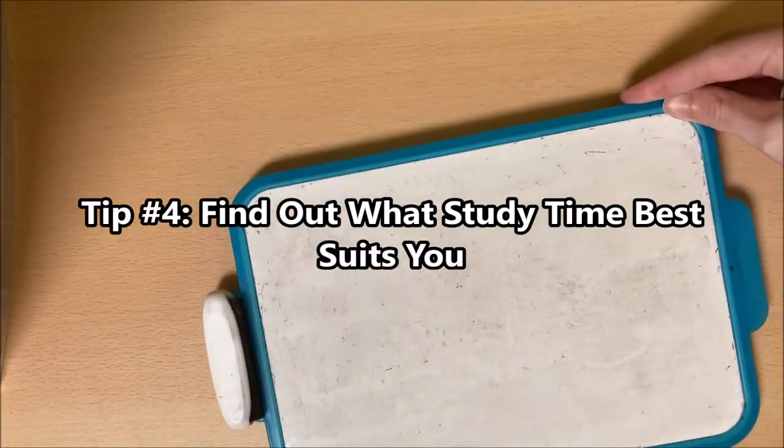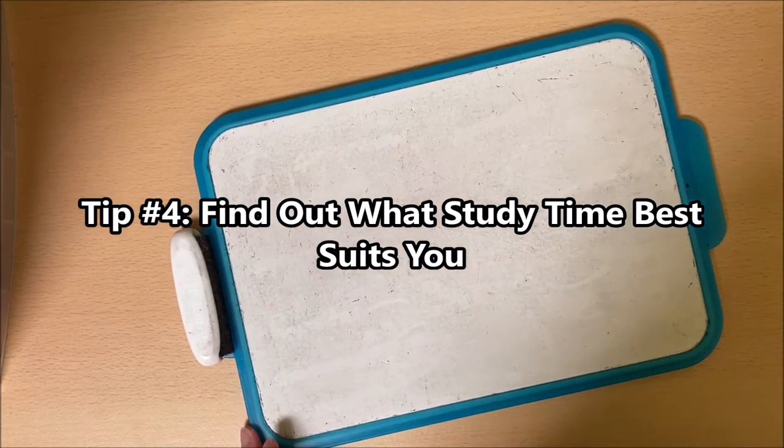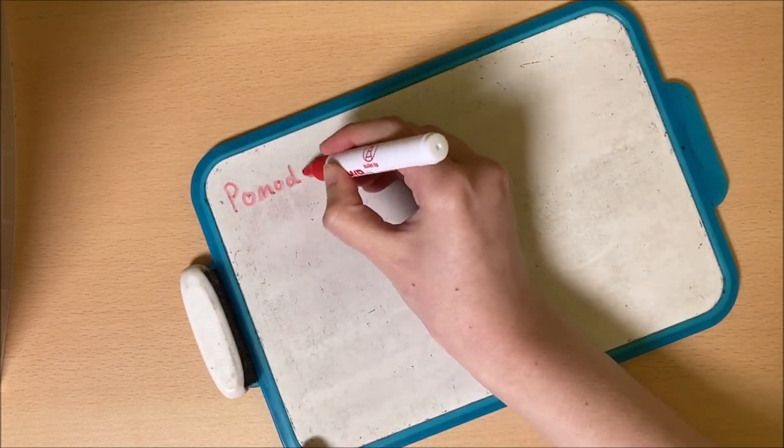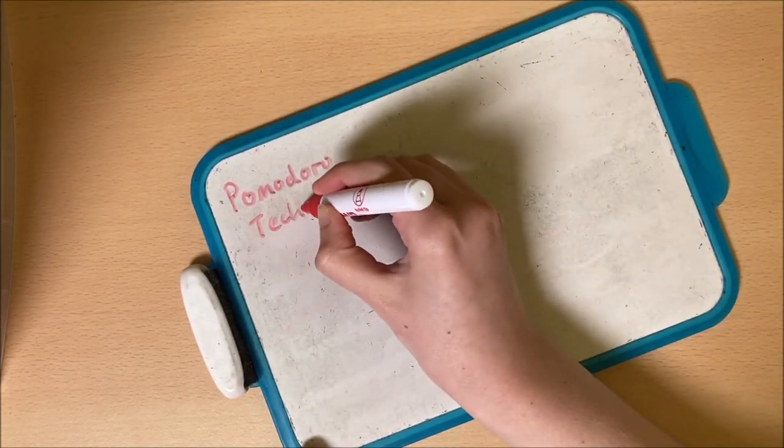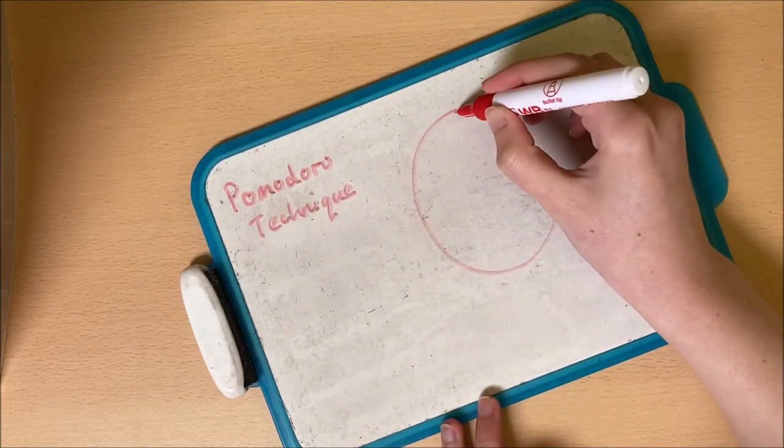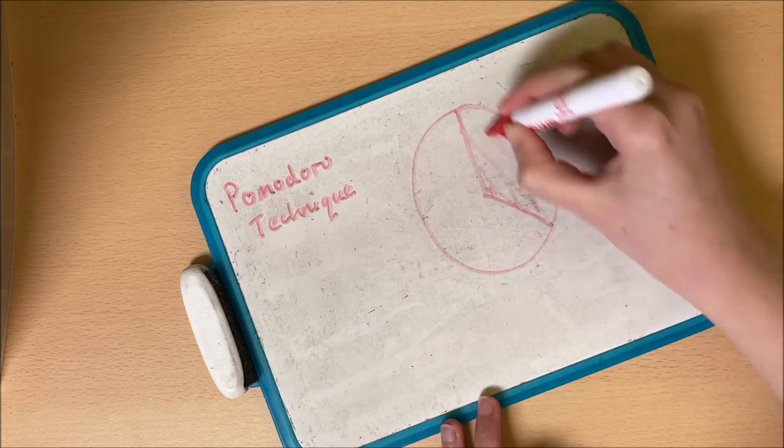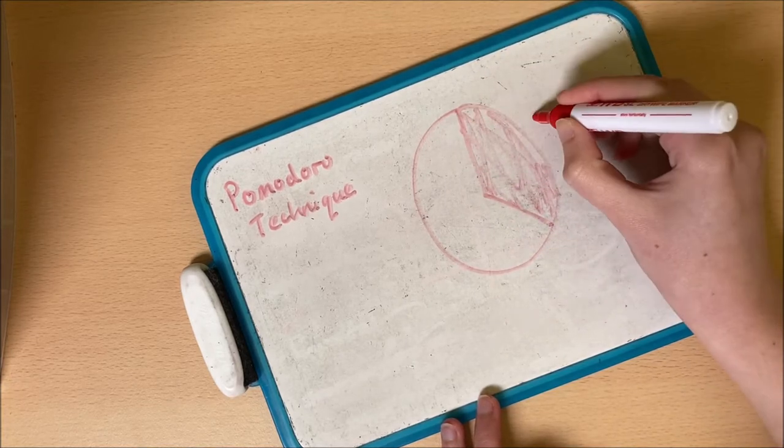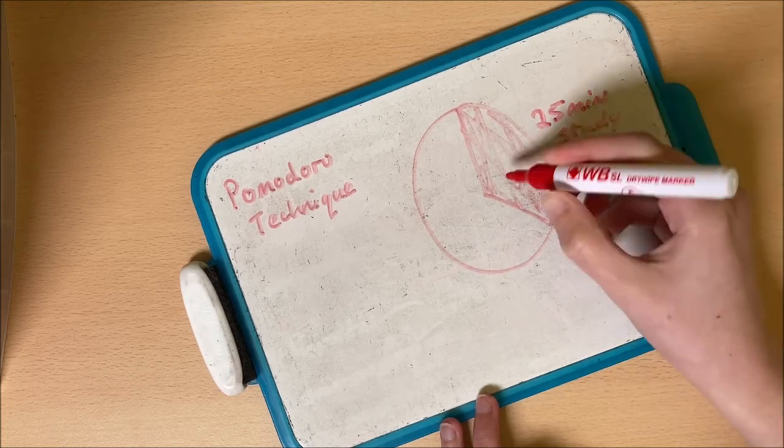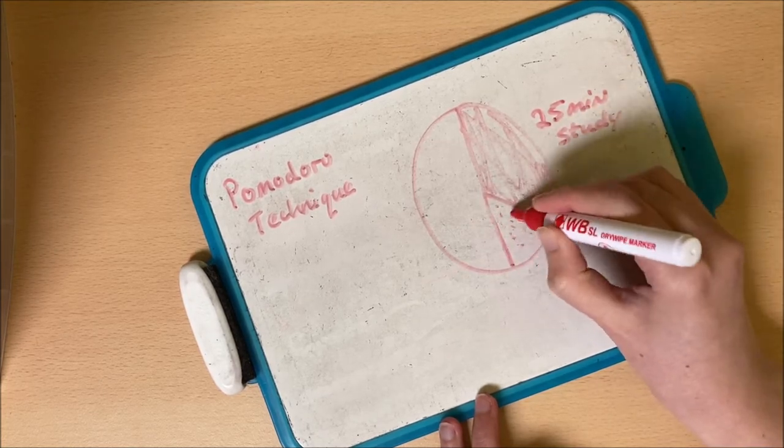Tip number four is to find out what study time best suits you. Personally, I cannot stand the Pomodoro technique. It doesn't work for me and it never has. I feel like 25 minutes is too short a time to focus in and 5 minute breaks are too short a time to actually relax in. It took me years and years to understand and accept the fact that this is normal and that it wasn't for me.